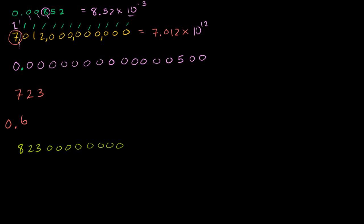For the very small decimal, we go behind the decimal point and find the first non-zero number, which is 5. So it's going to equal 5. There's nothing to the right of it, so it's 5 times 10 to the... counting how many positions to the right of the decimal we have, including the 5 itself: that's 14 positions. So it's 5 times 10 to the minus 14th power.